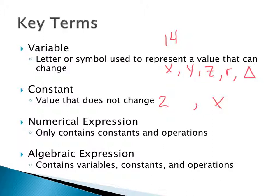Today we're going to take these ideas of variables and constants and use them to solve both numerical and algebraic expressions. Numerical expressions are basic math expressions — you take certain numbers and perform operations with them. For example, two plus two is a numerical expression. It's numerical because it only contains constants: two and two are both constant numbers. The operations are things like addition, subtraction, multiplication, or division, which give us an expression. An algebraic expression is similar but the big difference is the idea of a variable.